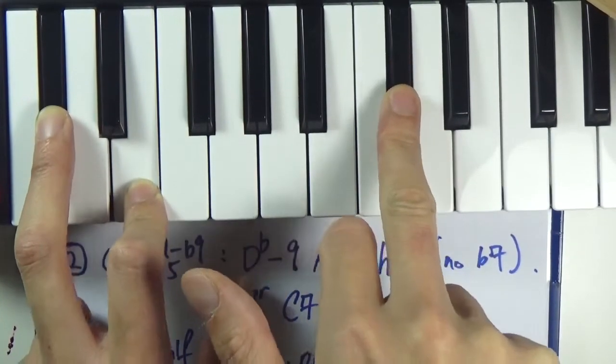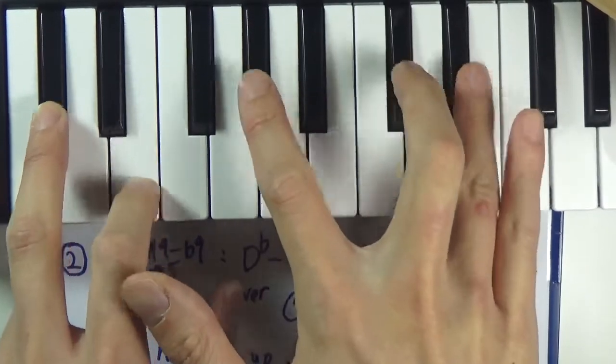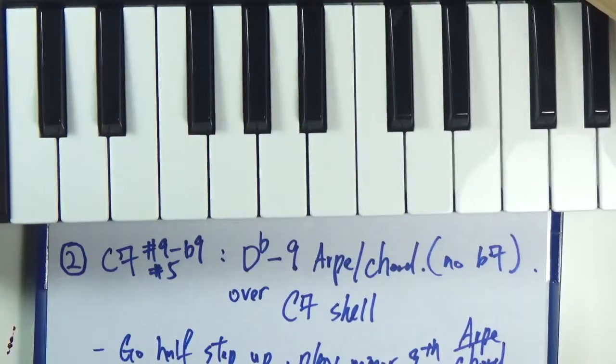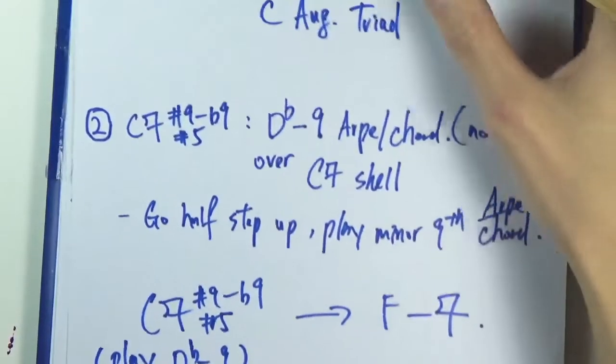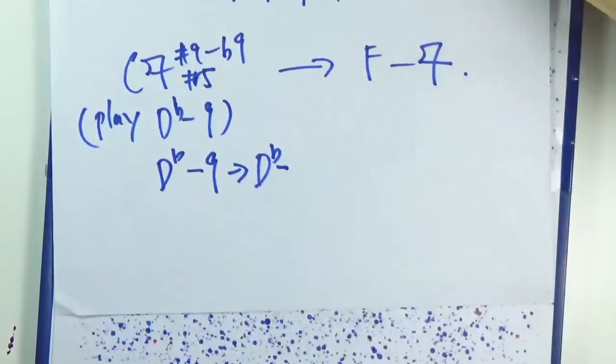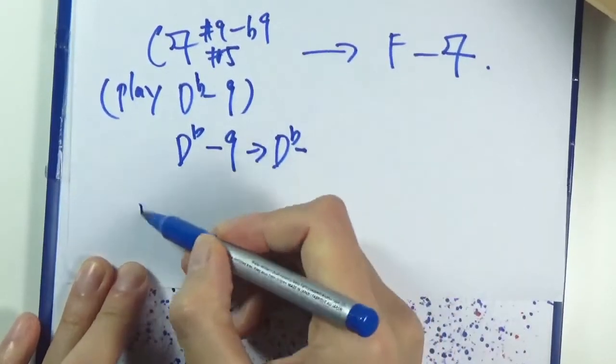So D-flat, and that's E... F-flat, that's really just E. And then you have G-flat, and then you have the ninth, E-flat. And again, C.